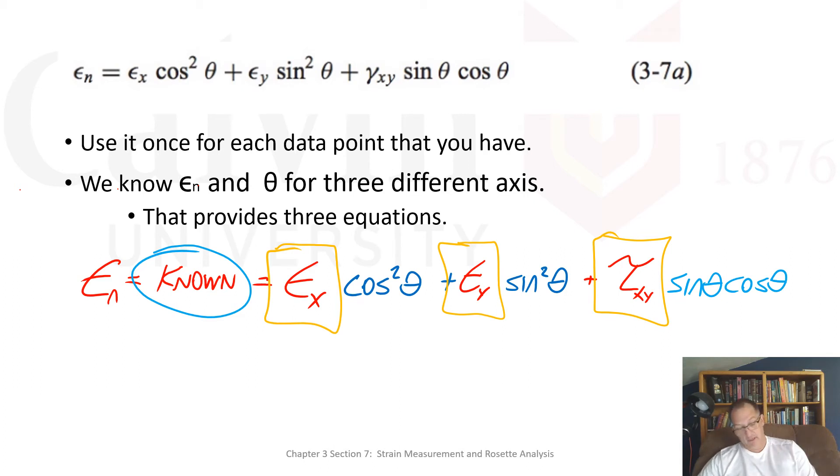That equation is the strain in the normal direction is equal to the strain in the X direction, you know the equation. We're going to use that once for each data point that we have. So what that means is we will write down the strain in the n direction, which is a known. We measured that, and we know the direction. If I looked at the previous gauge, I know the direction in this direction, which is going to be the theta equals zero direction. I know this direction, which is theta equals 45. And I know that direction, theta is equal to 90. Now we've got three equations, three unknowns.